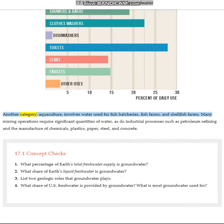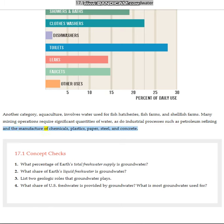Another category, aquaculture, involves water used for fish hatcheries, fish farms, and shellfish farms. Many mining operations require significant quantities of water, as do industrial processes such as petroleum refining and the manufacture of chemicals, plastics, paper, steel, and concrete.